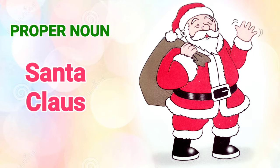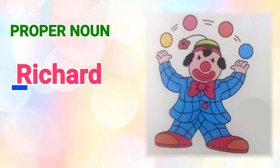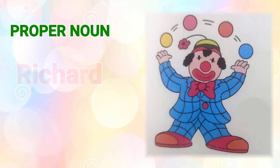Let's take another proper noun. I told you about a clown — that's a common noun. But if you make that person a proper noun, you can name that person Richard. Richard starts with capital R, whereas clown starts with small c. So there is a difference. A clown can be any person, whereas Richard is a particular person.